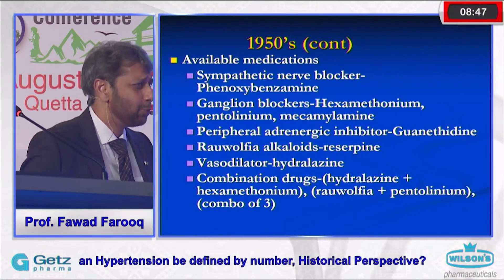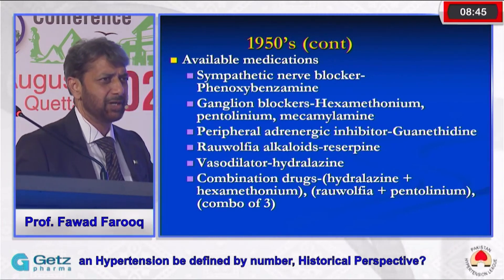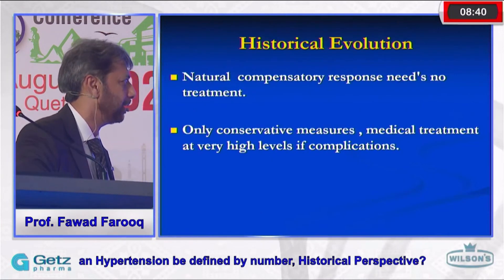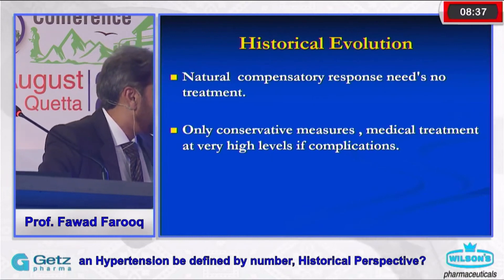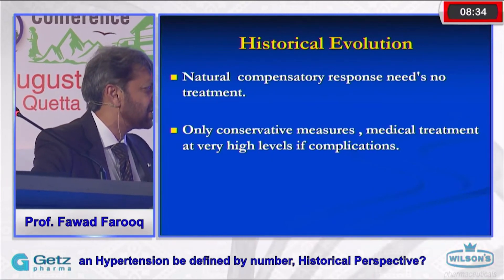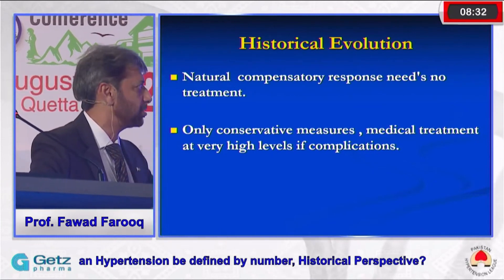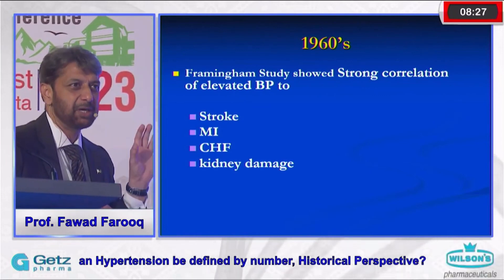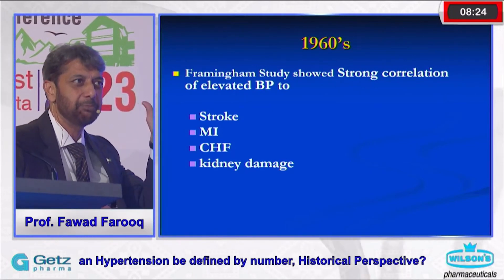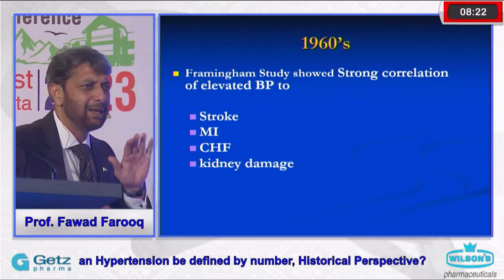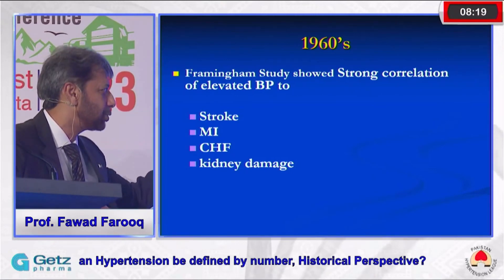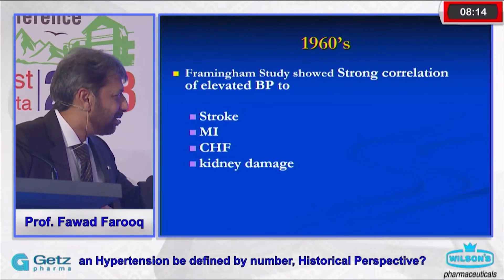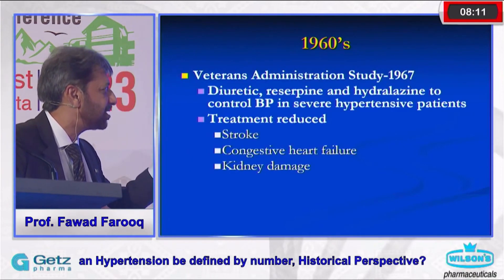The drugs available at that time were so intolerable that patients couldn't take them regularly. It was only in the 1960s, when insurance companies began tracking blood pressure measurements, that a clear relationship between high blood pressure and stroke, MI, CHF, and kidney damage was established, and this postulate was validated by different studies.